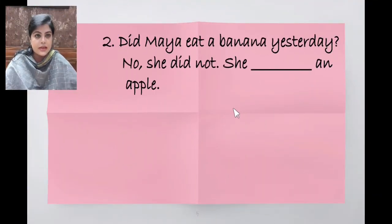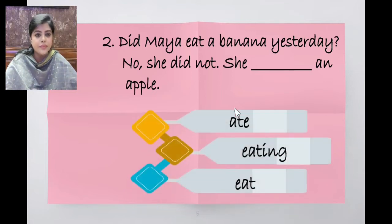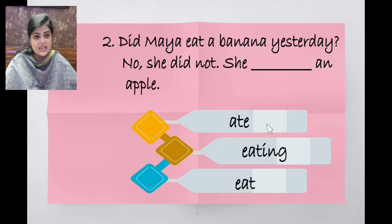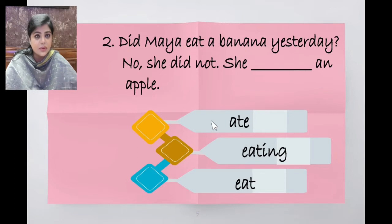Did Maya eat a banana yesterday? No, she did not. She dash an apple. Options: ate, eating, eat. We are talking about past tense here. The past tense of eat is ate. She ate an apple. The correct answer is ate.